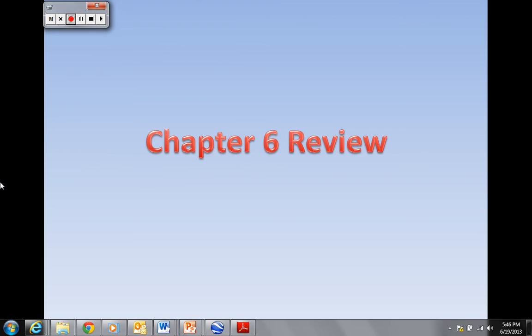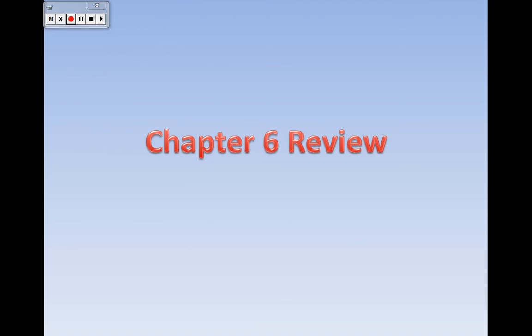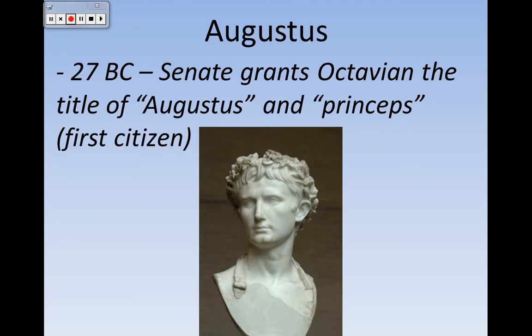Here we are with a brief overview of Chapter 2 on the Roman Empire. It begins with Augustus, who in Chapter 5 finished up with the Second Triumvirate, where Augustus defeated Mark Antony for power. At that time he was known as Octavian, but now he's given this new name of Augustus, sort of like 'the regal one.'